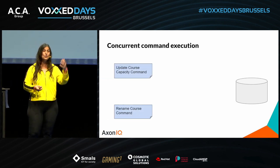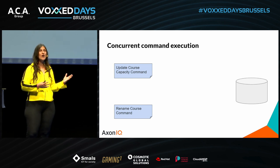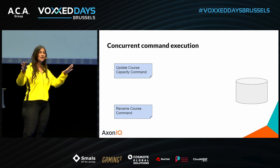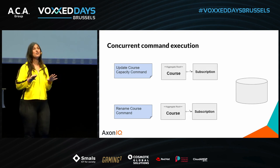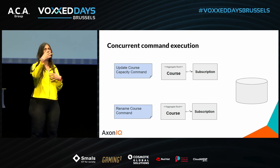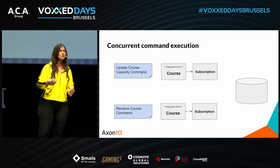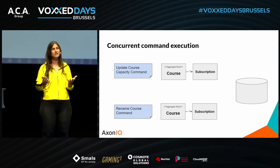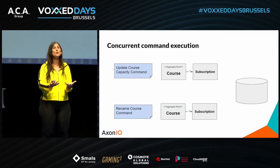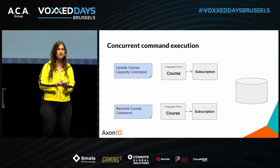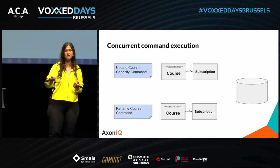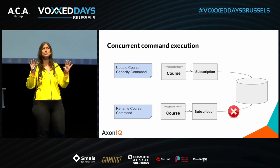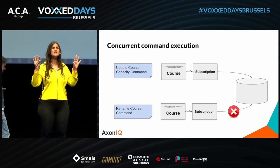Let's say we receive at the same time two commands related to the same course instance — one to change the course capacity, and one to rename the course. Both commands are handled simultaneously: two instances of the same aggregate are loaded from the database and modified according to their respective commands. The problem arises when we try to persist, because the aggregate is the guardian of invariants and cannot accept concurrent modifications.